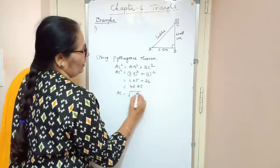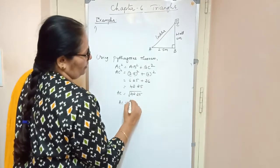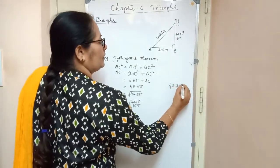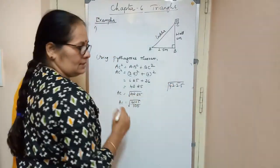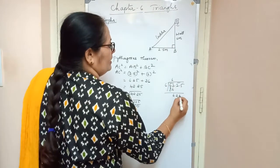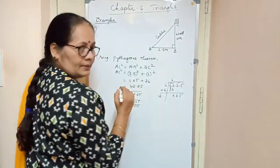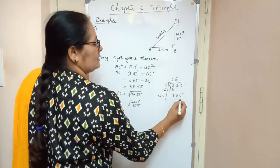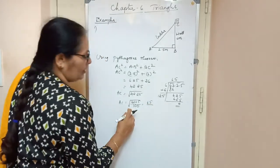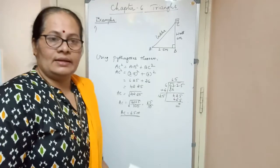So, AC = √42.25. To find the square root, write 42.25 as 4225/100. Finding √4225: divide 42 by the nearest square number, 6² = 36. Bring down 25, making 625. The next digit is 5; 125 × 5 = 625, remainder 0. So √4225 = 65, and √100 = 10. Therefore, AC = 65/10 = 6.5 meters. This is the length of the ladder.